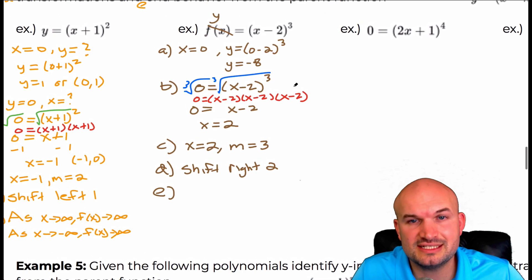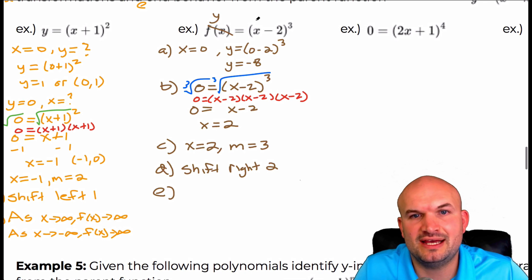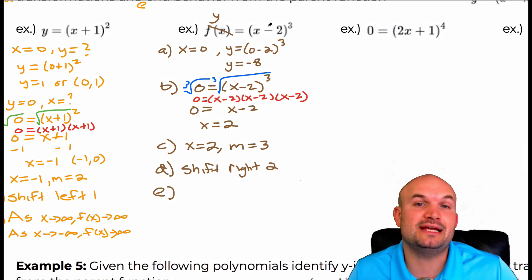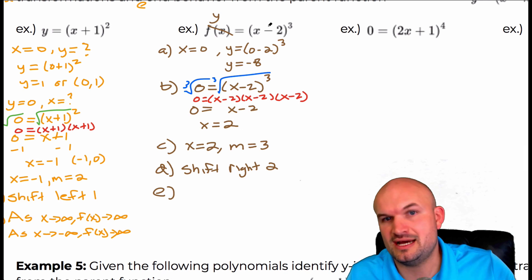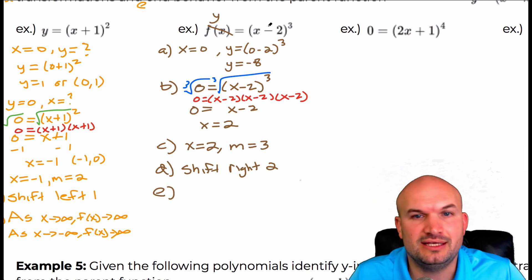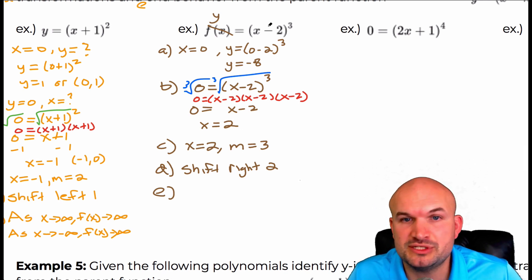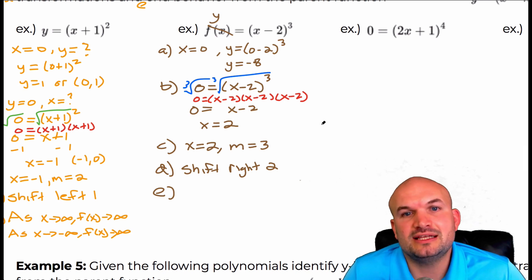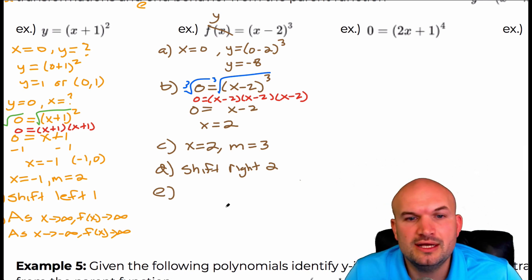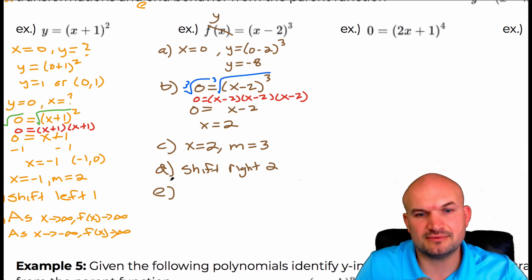For the end behavior: if we were to expand this, you would have x cubed — the highest degree is going to be three. The leading coefficient is a positive one. So therefore the graph is going to fall left and rise right. As x approaches infinity, f of x approaches infinity. As x approaches negative infinity, f of x approaches negative infinity.